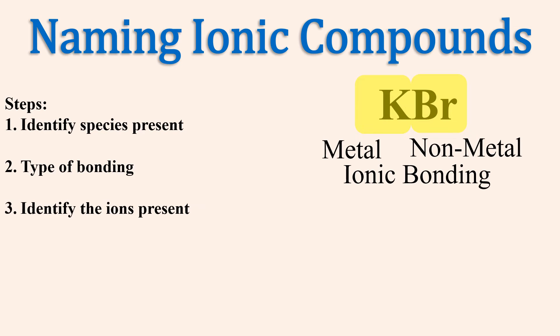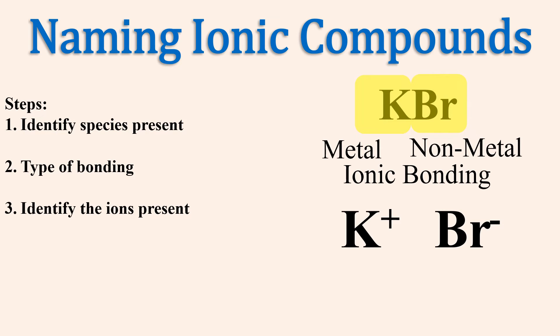Next, identify the ions present. Potassium, the alkali metal ion, is the cation K+, and bromide, the halide, is the anion.